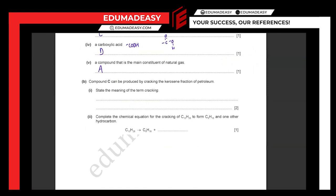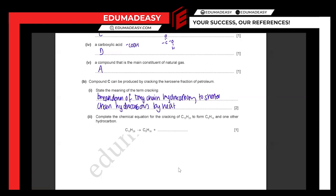They're asking what the meaning of the term cracking is. Cracking is the breakdown of long-chain hydrocarbons to short-chain hydrocarbons. That's your first mark. For the second mark, people often forget you have to say 'by heat.' By heat is somewhat optional because in A-levels you'll learn there are two types of cracking: catalytic cracking and thermal cracking. So cracking is the breakdown of long-chain hydrocarbons to shorter chain hydrocarbons.